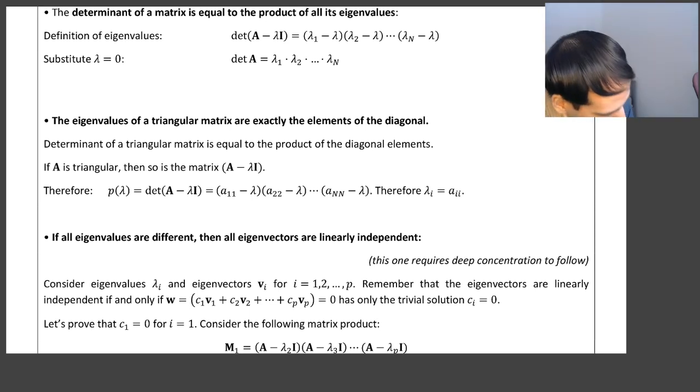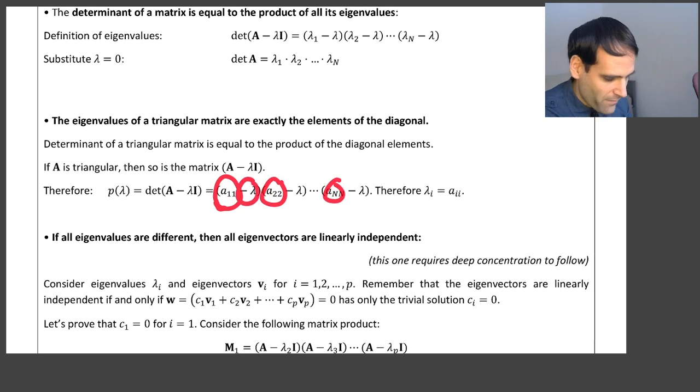And therefore, we can conclude the following, that the determinant of this matrix A minus lambda I, which is triangular, is simply the product of all the elements in the main diagonal, which is the elements of the main diagonal in matrix A, minus lambda, because we are subtracting lambda times the identity matrix. And this we know, by definition of eigenvalues, that this is going to be the characteristic polynomial, and therefore, the roots are simply the elements of the main diagonal. And now this is a proper proof.